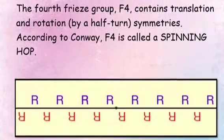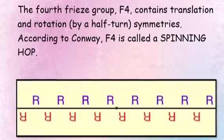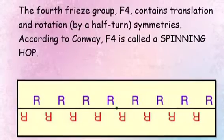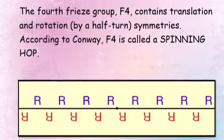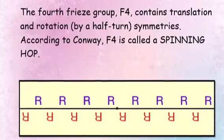The fourth freeze group, F4, contains translation and rotation by a half turn symmetries. According to Conway, F4 is called a spinning hop.